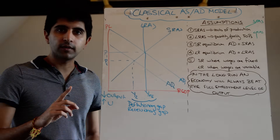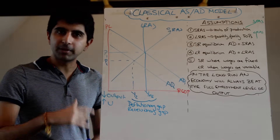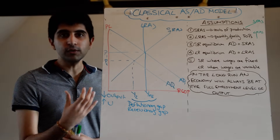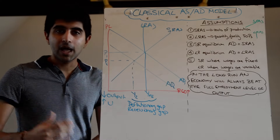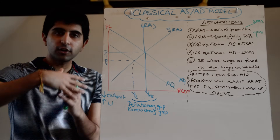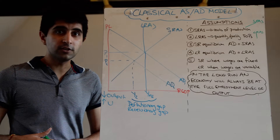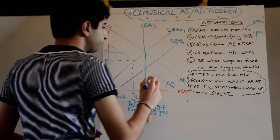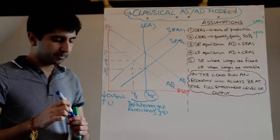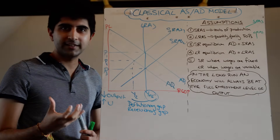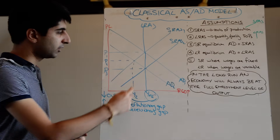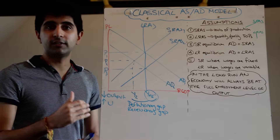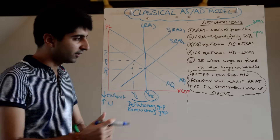Crucially, in the classical model, this will not be sustained in the long run. Eventually wages become variable — no time frame given, but it happens because with persistent unemployment, workers revise down their wage expectations. They realise that their high wage expectations may be why they are not getting work. So workers start to accept lower wages, reducing costs of production for firms and shifting SRAS to the right to SRAS2, taking the economy back to full employment at an even lower price level P3.